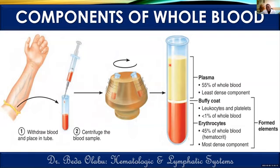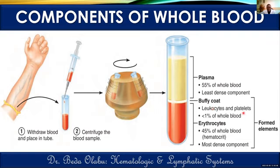The most superficial part of centrifuged blood is occupied by plasma, which is the least dense, at about 55% of whole blood. A very thin layer of less than 1% remains between the two, known as the buffy coat. The buffy coat represents the region occupied by white blood cells as well as platelets — very important components that occupy a very small proportion of whole blood.